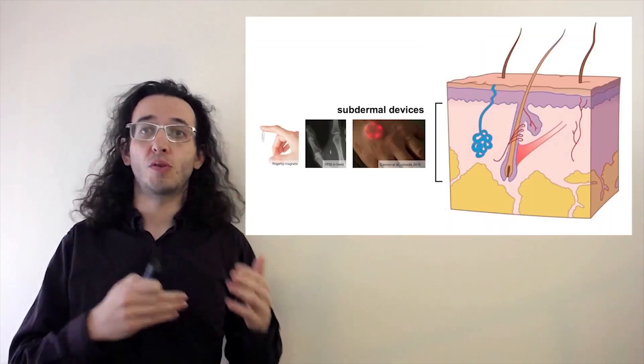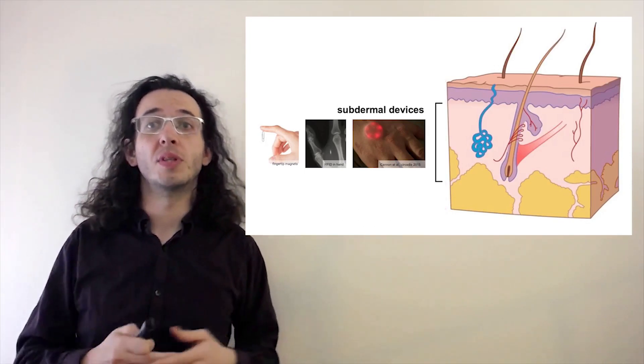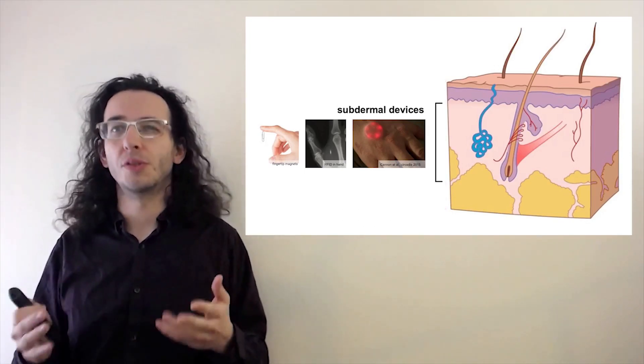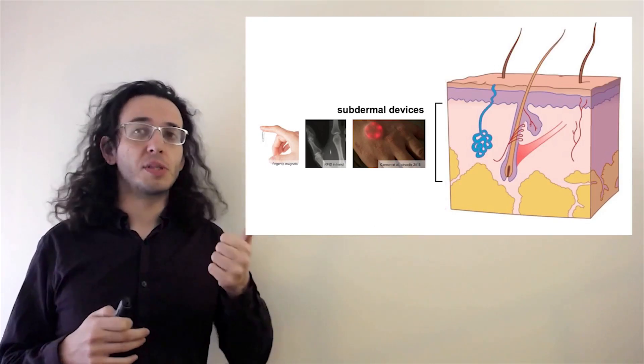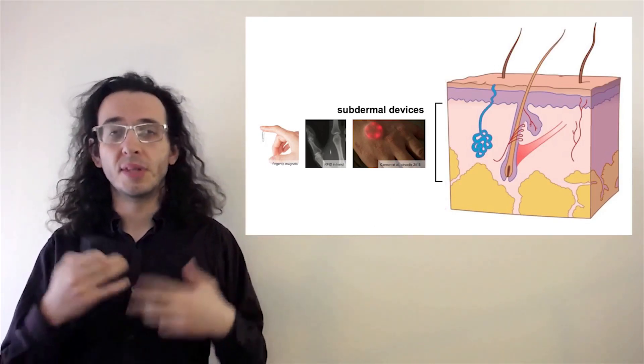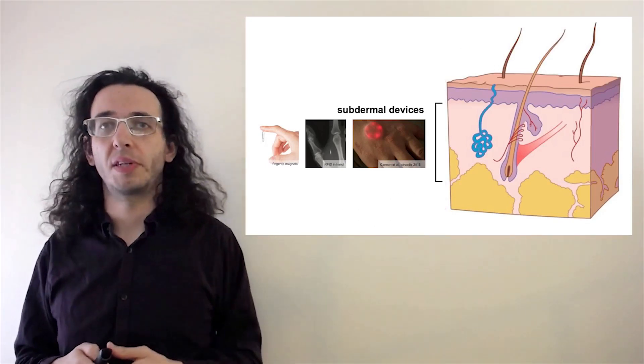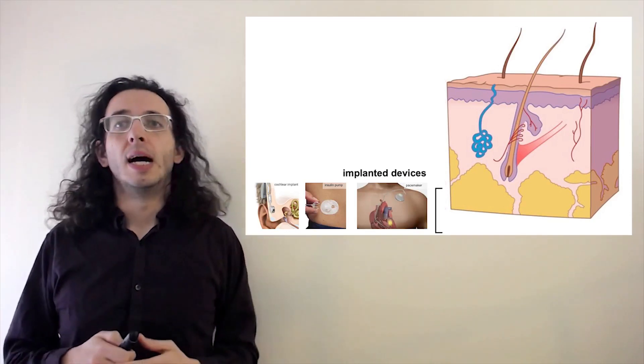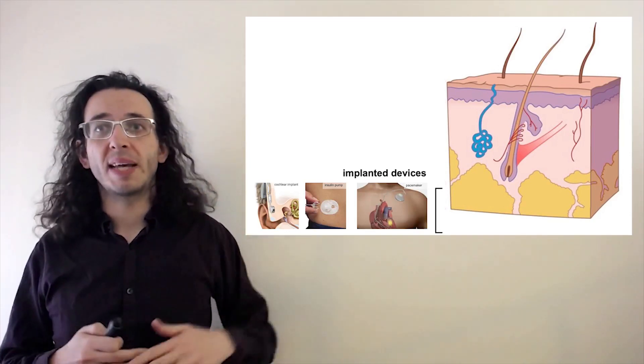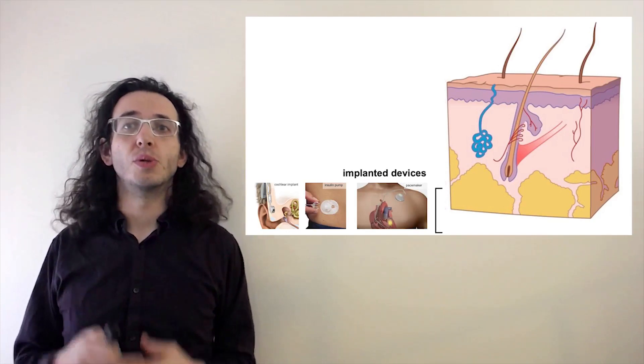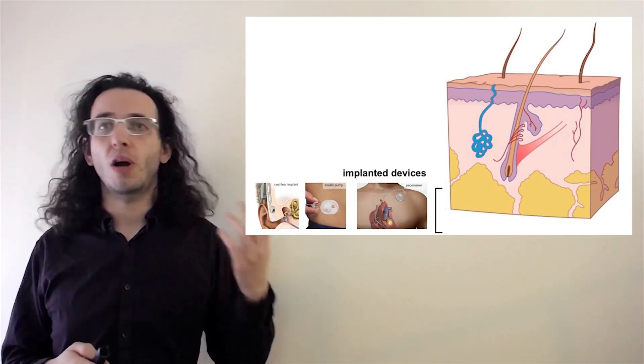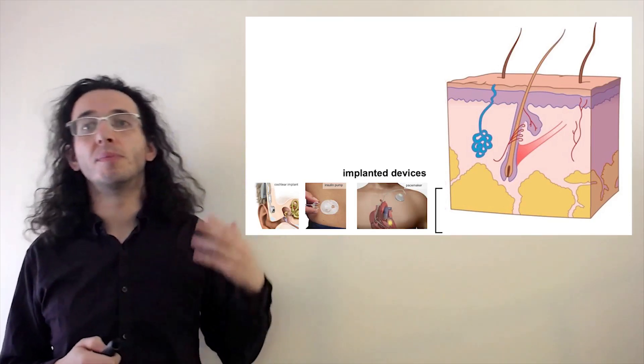Now the next type of devices are placed under the user's epidermis, and are therefore literally under your skin. These are fingertip magnets, RFID implants, and even some more complex interactive devices. Lastly, at the last layer, as you move past the skin and into the fat and the tissue, you have truly implanted devices such as cochlear implants, insulin pumps, and pacemakers.